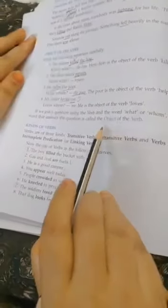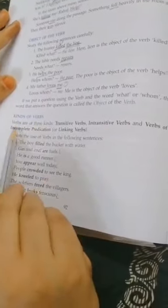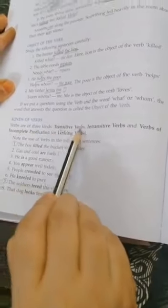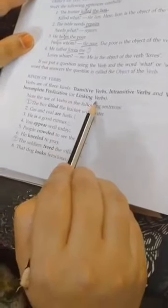Now coming to kinds of verbs. Verbs are of three kinds: transitive verb, intransitive verb, and verbs of incomplete predication or linking verbs.